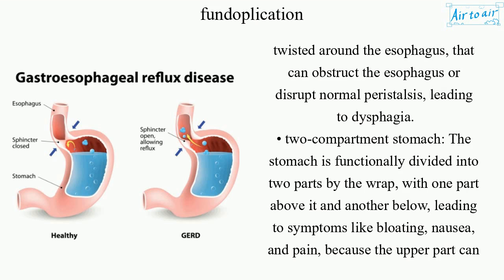Two compartment stomach: the stomach is functionally divided into two parts by the wrap, with one part above it and another below, leading to symptoms like bloating, nausea, and pain, because the upper part can trap air and food.